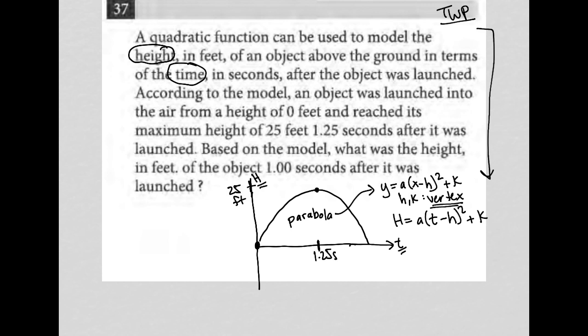We know the vertex, because the question said that it has a maximum height here, 1.25 seconds for t and 25 feet for the height. I am going to say that now my h value, so I have capital H equals a t minus h, which is the 1.25. Things are getting a little weird because we have multiple h's, but this is just the x value of the vertex. The x value of the vertex is 1.25, so squared plus now the k value, which is the y value, the second portion of the vertex, is my 25.